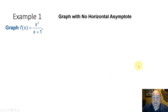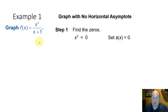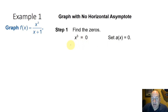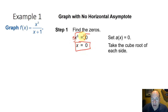Let's look at an example of a graph that doesn't have a horizontal asymptote at all. f(x) equals x cubed over x plus 1. Let's find the zeros — where is the function going to equal zero? We set the numerator equal to zero, because in a rational function, where the numerator equals zero is where the function equals zero, as long as the denominator doesn't equal zero at the same time. Taking the cube root of both sides, this function has one zero at x equals zero.